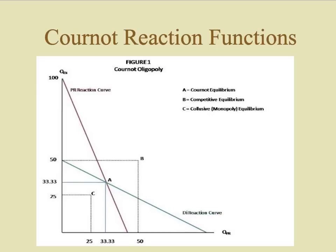We also have DI's reaction curve to the quantity that firm PR produces. If PR produces a large quantity, DI produces nothing. If firm PR produces zero, the reaction of firm DI is quite high — in this case 50. You can pick any quantity for firm PR and see the reaction for firm DI. At the Cournot equilibrium point A, the combined quantity is lower than the competitive outcome but higher than the collusive monopoly quantity. Remember that Cournot is essentially a mix of results somewhere between the competitive and collusive outcomes.